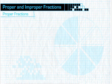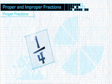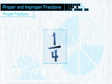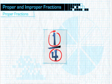There are two basic types of fractions, proper and improper. A proper fraction is a fraction whose numerator is smaller than its denominator.